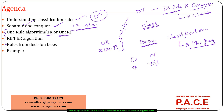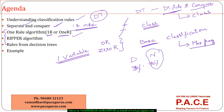For example, if I'm looking at default versus no default, and 70 percent of people are no default and 30 percent are default, any new data is classified as no default only. That is the Zero-R algorithm. In the One Rule algorithm, I create a rule based on one variable to see if that single feature can segregate the data better than Zero-R.